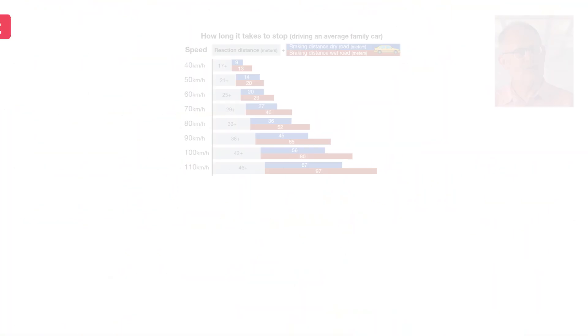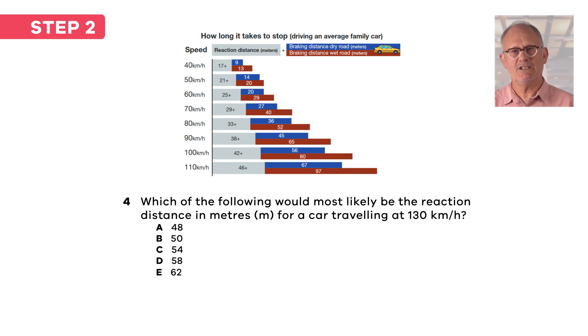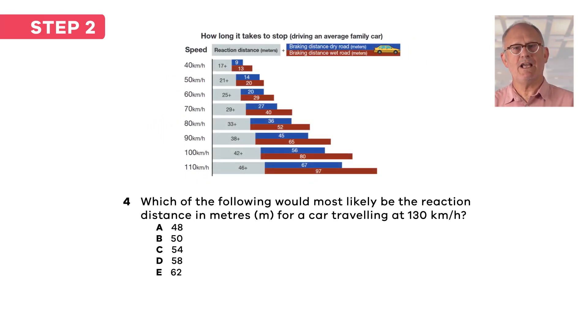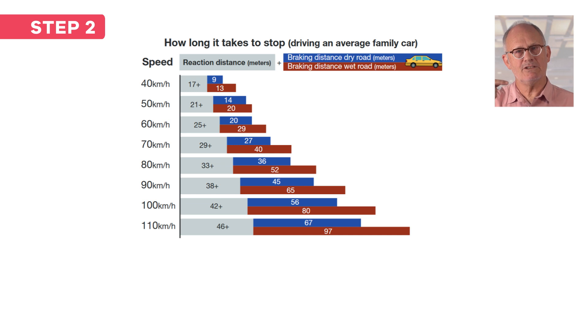The second step is to read the question again and think about the maths you will need to do to solve this problem. The question is asking you to work out the reaction distance at a speed of 130 kilometres per hour. The graph shows you that at 110 kilometres per hour the reaction distance is 46 metres. The question asks you though for the reaction distance at 130 kilometres per hour, which is going to be higher than 110 kilometres per hour shown on the graph. You need to see if there is a pattern in how the reaction distance increases when the speed goes up each time by 10 kilometres per hour.